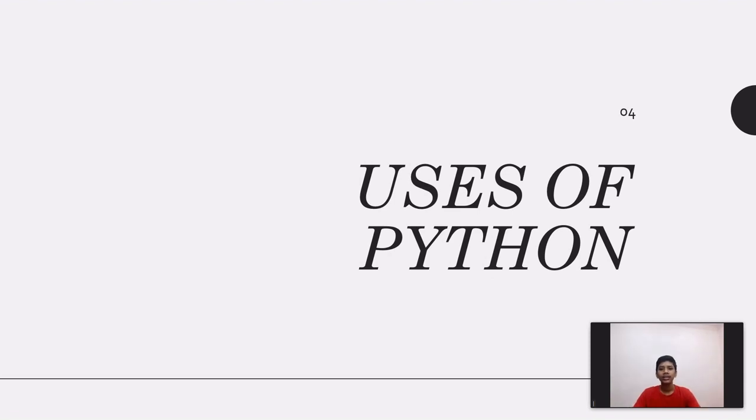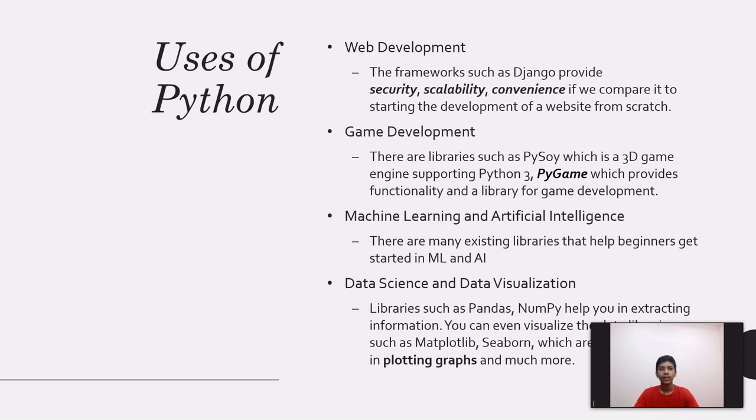What are the uses of Python? In what fields is Python used? Python is used in many different fields, but these are the major ones. In web development, frameworks such as Django and Flask make web development in Python really simple and super flexible. They also provide security, scalability, and convenience if you compare it to starting the development of a website from scratch.